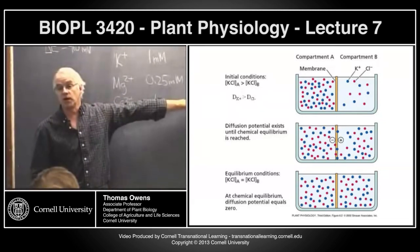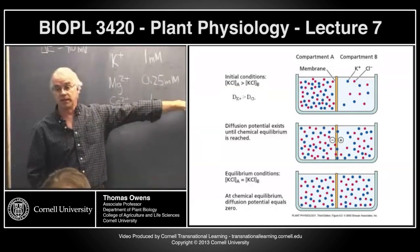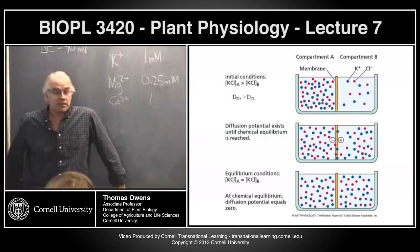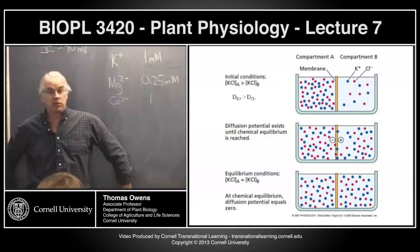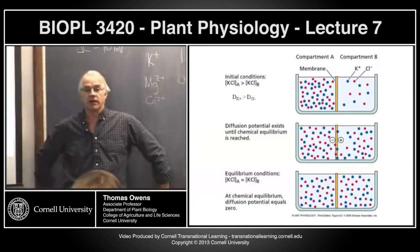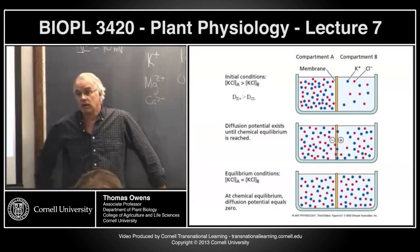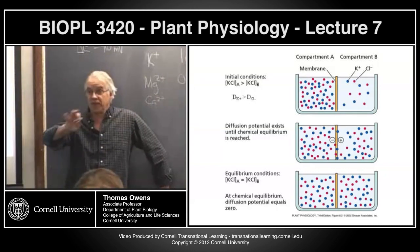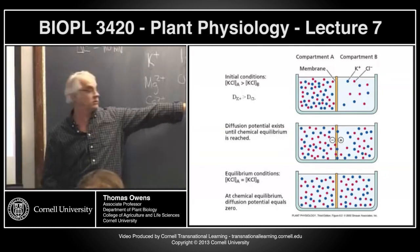All cells actively transport calcium out of the cytoplasm. Under normal circumstances, cytoplasmic calcium levels are low. Increases in cytoplasmic calcium play important roles in all sorts of signal transduction pathways, so the cell must be spending energy to pump calcium out. We'll talk more about calcium when we discuss signaling.